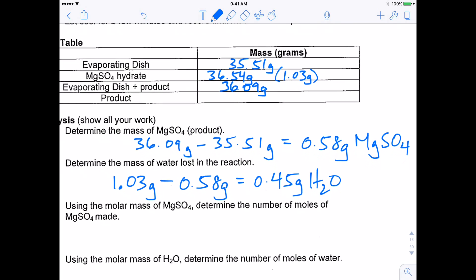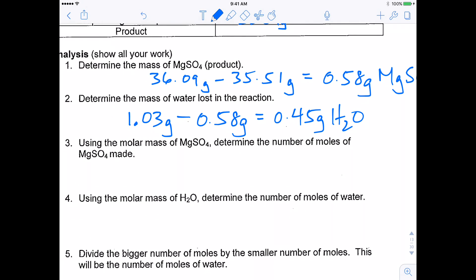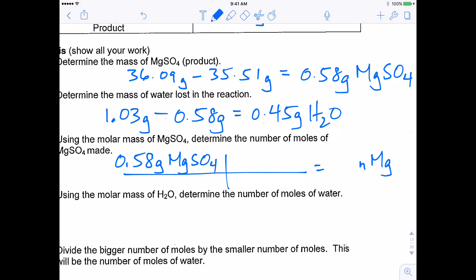So then question number three says, using the molar mass of MgSO4, determine the number of moles of MgSO4 made. So we're going to start out, the thing that we know is our 0.58 grams of MgSO4. And what I'm going to try to find are moles of MgSO4. Remember, our abbreviation for moles is the letter n. So I'm going to put my units of grams on the bottom and moles on top. And when you're comparing grams and moles, the relationship between grams and moles is always the molar mass, which says for every one mole, it'll weigh a certain number of grams, which you would get from our periodic table. So our molar mass of MgSO4 is 120.4 grams.